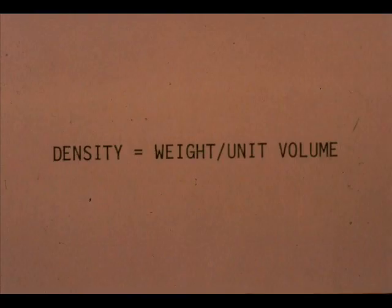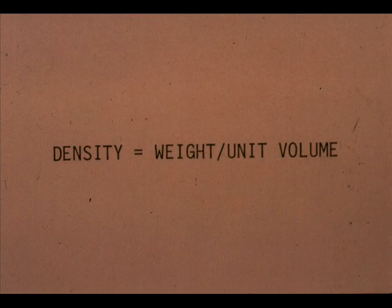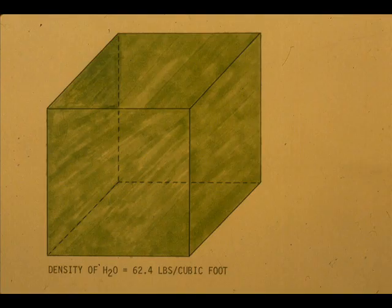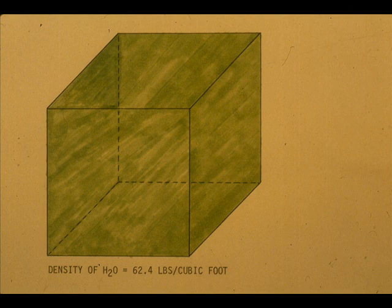Density has two dimensions: weight and volume. The density of water is 62.4 pounds per cubic foot. 62.4 pounds is the weight. A cubic foot is the volume.